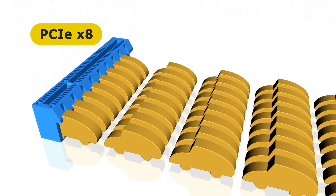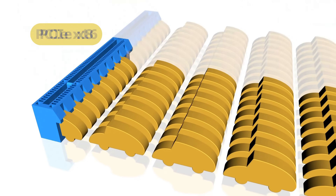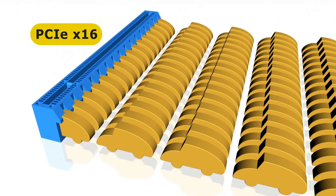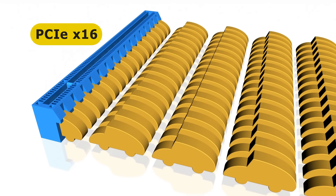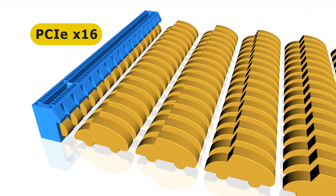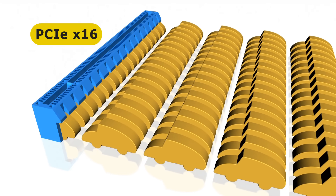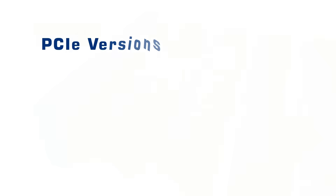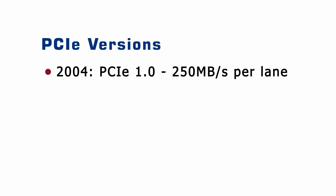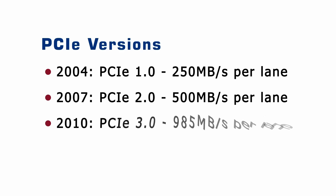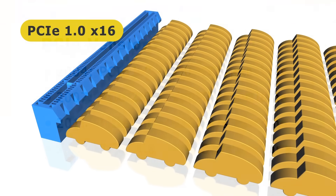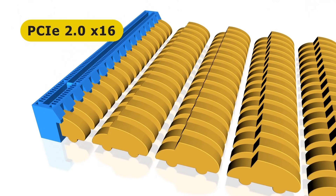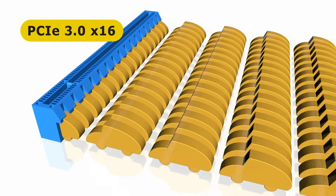If we increase again to PCIe x8 and then PCIe x16, we double and double again the data throughput of the PCIe slot without having to increase the speed of its underlying electronics. Although PCIe increases speed by adding lanes, since 2004 the PCIe standard has been upgraded several times — with versions known as PCIe 1.0, 2.0, 3.0, and 4.0. Each version has a lane speed roughly double that of the previous generation, so making our little cars move twice as fast with each PCIe version upgrade.